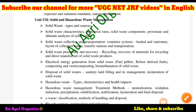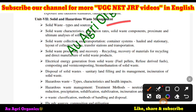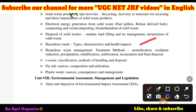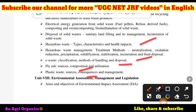Unit 7 — solid and hazardous waste management — covers radioactive pollution (from 12th standard chemistry), solid waste types and characteristics, how waste is generated, collected, and transported, degradable and non-degradable materials, recycling and disposal methods. Hazardous waste types, characteristics, health impacts, e-waste (laptops, mobiles), fly ash components, and plastic waste sources, consequences, and management are also covered.